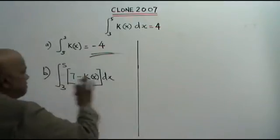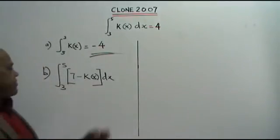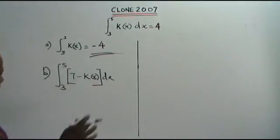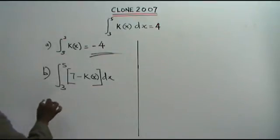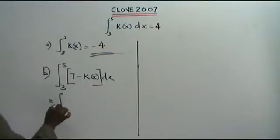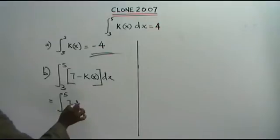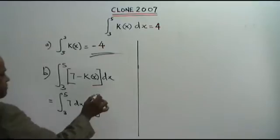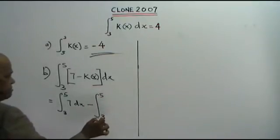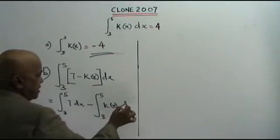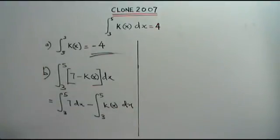Now Part B: you are asked to find the value of this. We rewrite this as: the integral between 5 and 3 of 7 dx, minus the integral between 5 and 3 of k(x) dx.